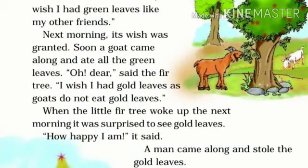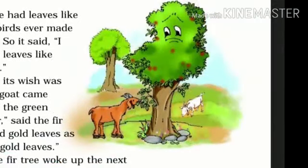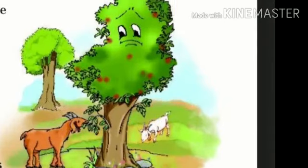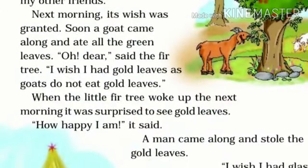Explanation: On the second day in the morning, the tree's first wish had come true. But a goat came along and ate all the leaves. Animals eat leaves, but there are few leaves they cannot eat — like fir tree leaves. The fir tree did not like it when the goat came and ate all the leaves from its branches. So it wished again for its second wish: it wanted gold leaves so that animals could not eat them.